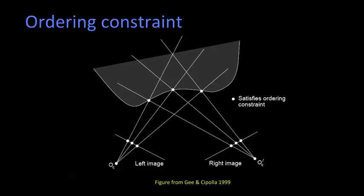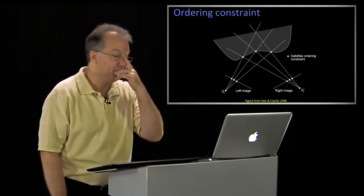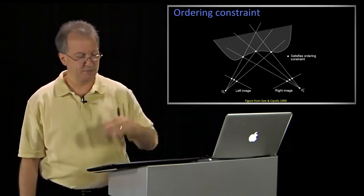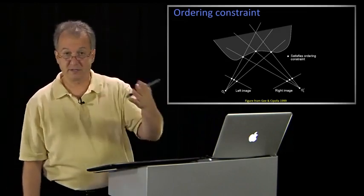The ordering constraint basically says that if I've got pixels in my left image that go ABC, they're going to appear in the same order ABC in my right image. And that's typically what happens when I look at a single solid surface. So when is this violated? When I'm not looking at a single solid surface.